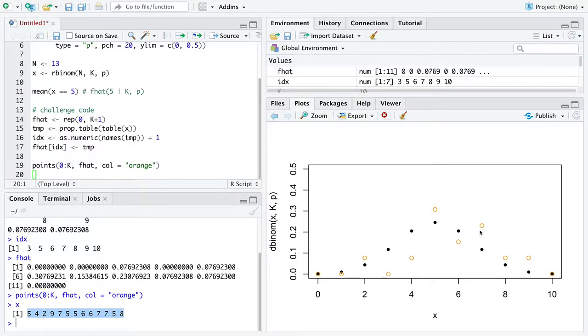So our orange points, the estimates, are quite close to the true values f at each value of x. But notice, all of this code, as complex as it is, only depends on the value of x, on the vector x. It in no way depends on the letter k or p.